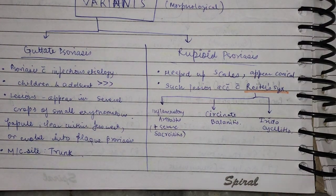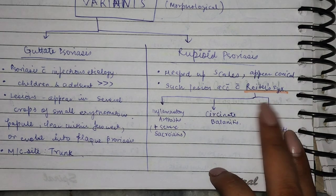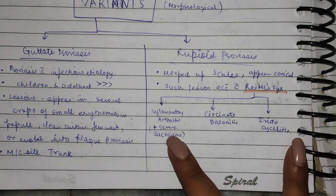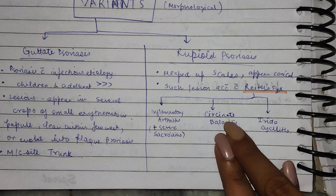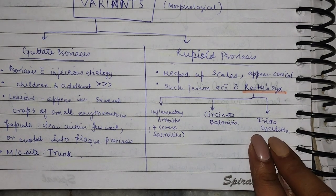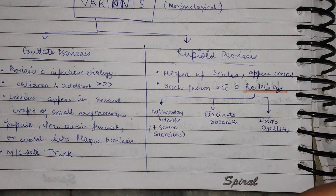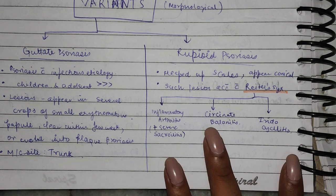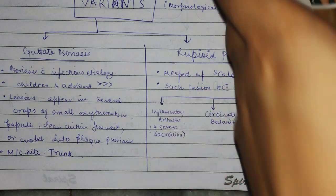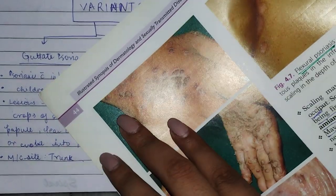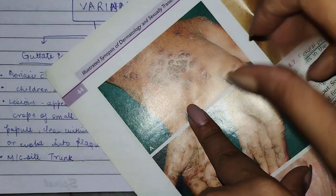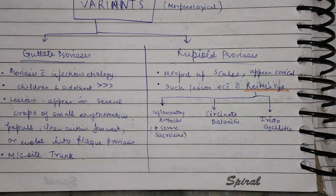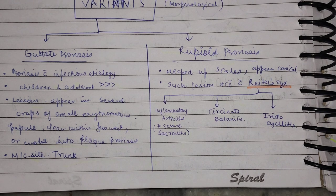Heaped-up scales appear — this is why it is conical. Reiter's syndrome is associated and is very common — it involves inflammatory arthritis, urethritis, and conjunctivitis. In rupioid psoriasis, scales are heaped up — this is called rupioid psoriasis. As you can see in the photo, it is clear what psoriasis looks like. We have done some basic things about psoriasis.